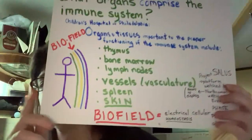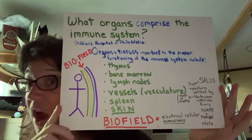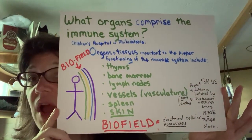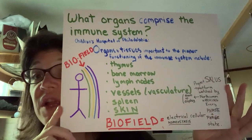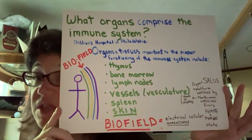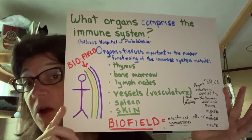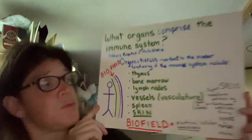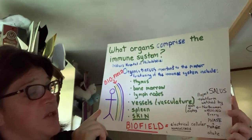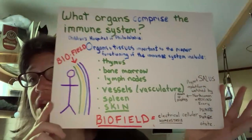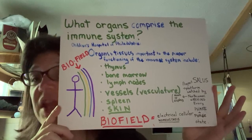Your biofield is 80% of your immune system. Why? What organs comprise your immune system? Well, according to the Children's Hospital of Philadelphia, your thymus, bone marrow, that's where your photons are generated out of in part, also the small intestine, lymph nodes, vessels in vasculature, the spleen, and your skin. What's the largest organ of the body? The skin.